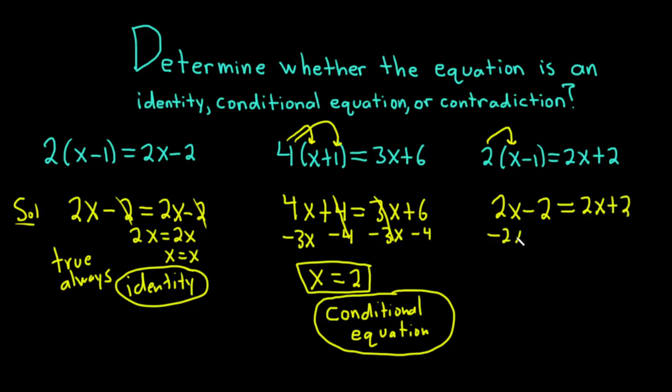So here we get 2x plus 2. We can subtract 2x from both sides. And that gives us negative 2, which is equal to 2, which is false. So this is called a contradiction. Remember, a contradiction is an equation that is never true.